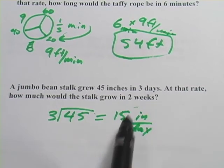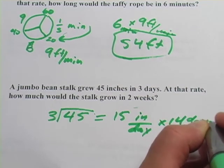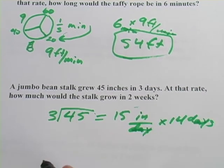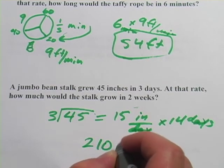And then two weeks, well that's 14 days. So we'd multiply that by 14 days. The days cancel out. We get 15 times 14 inches, and we get 210 inches.